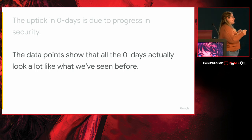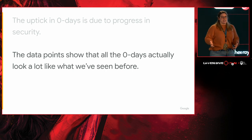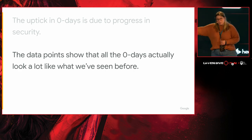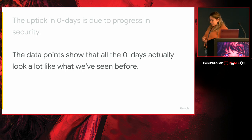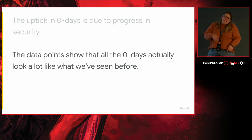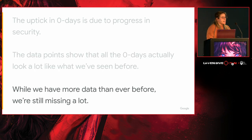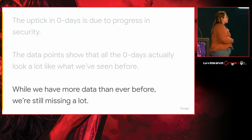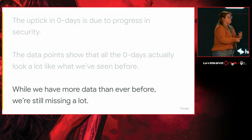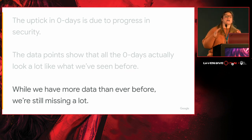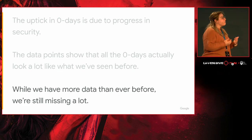The second point is that with so many more data points, what we actually found is nothing too special. Things we've seen before — bug patterns from the last couple of years, components targeted matched public research, exploit methodologies weren't really new. There is one exception, which we'll get to, but in general 56 out of 57 seemed pretty meh. Lastly, with more data than ever, I found even more confidence that we're missing more than I thought — every year we seem to be catching a smaller and smaller percentage of zero days actually in use.